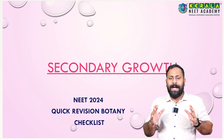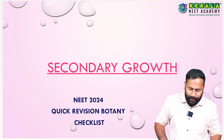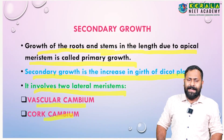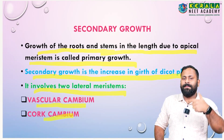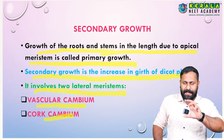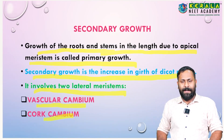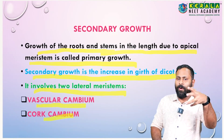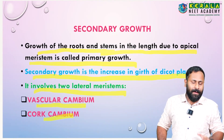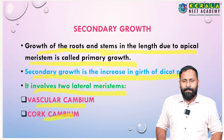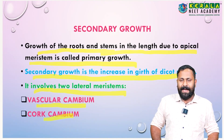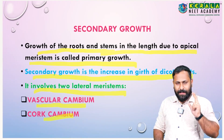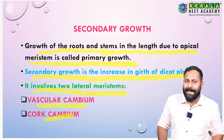Secondary growth is an important topic in the anatomy of flowering plants. Secondary growth is present only in dicot stem, dicot root, and gymnosperms. Monocot root and monocot stem do not undergo secondary growth due to the absence of cambium. Dicot plants and gymnosperms undergo secondary growth.